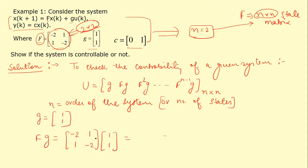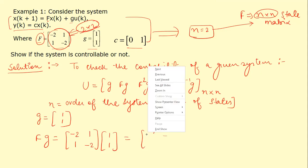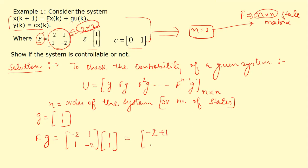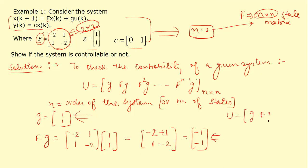Computing FG: 1×(-2) + 1×1 = -1, and 1×1 + 1×(-2) = -1. So FG = [-1, -1]ᵀ. Substituting into the controllability matrix U, we get U = [[1, -1], [1, -1]].